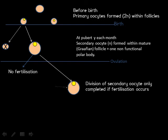Alternatively, the oocyte may be fertilised, in which case reduction division is completed, and a further non-functional polar body is produced, and it is usually resorbed.